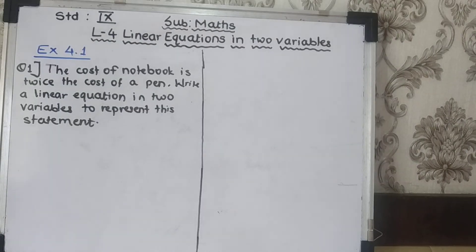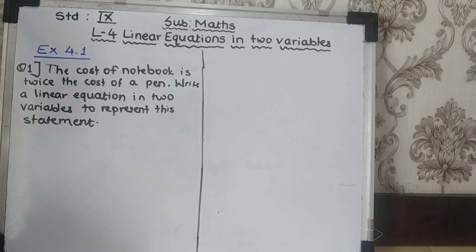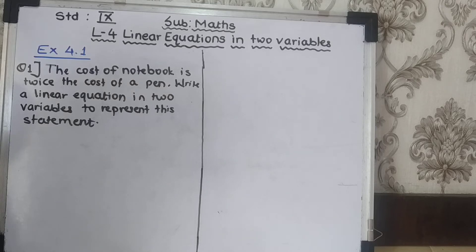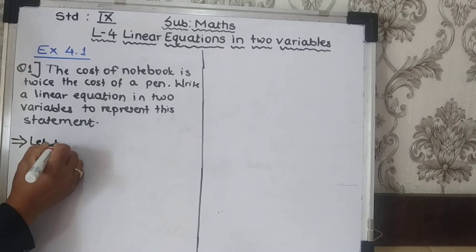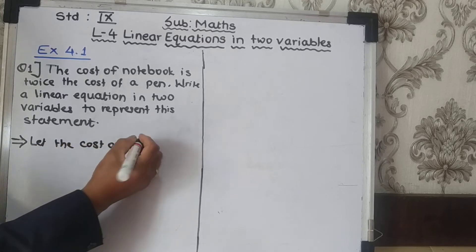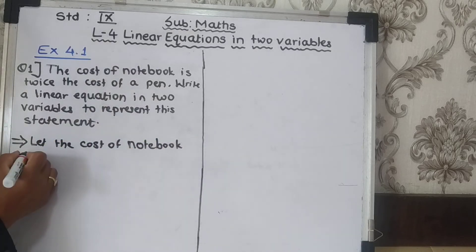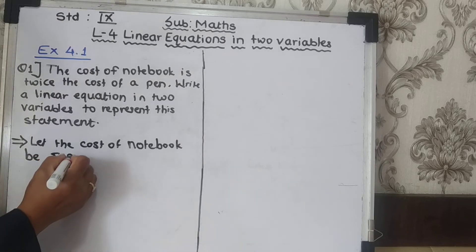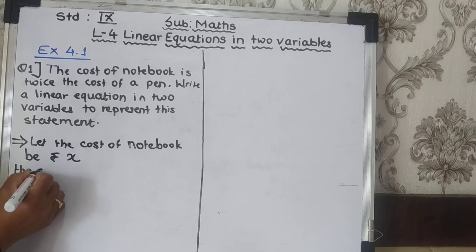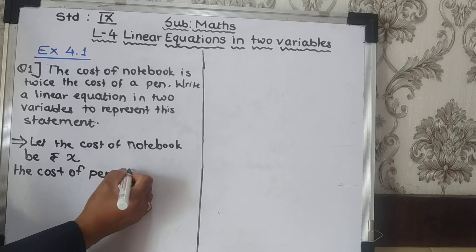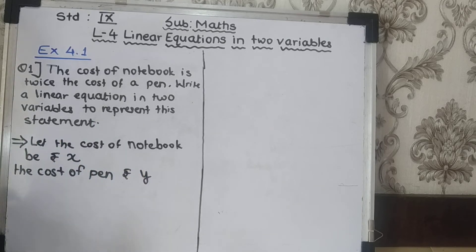Let's start with exercise 4.1. The first question: 'The cost of a notebook is twice the cost of a pen. Write a linear equation in 2 variables to represent this statement.' The textbook hint says: let the cost of a notebook be x rupees and the cost of a pen be y rupees.